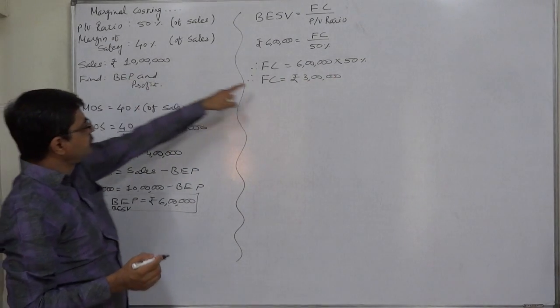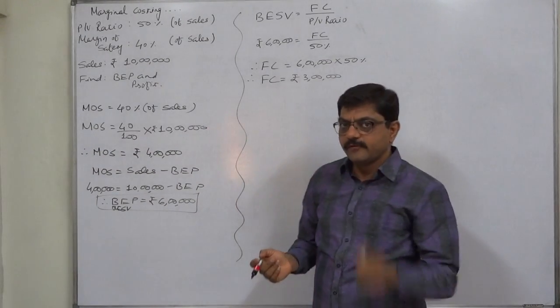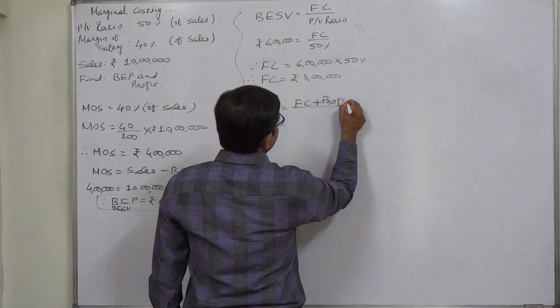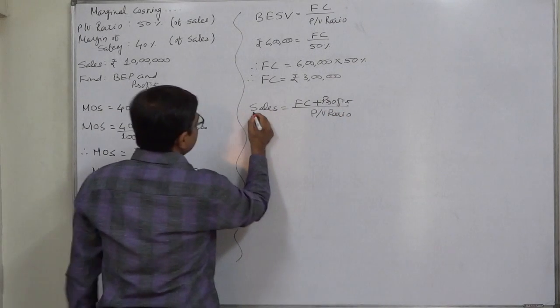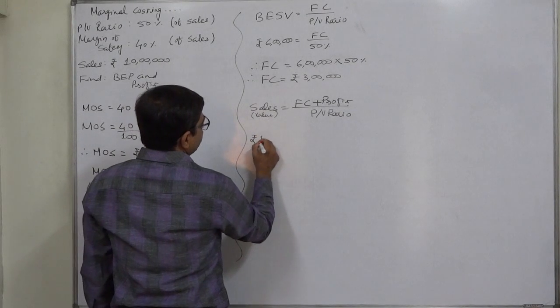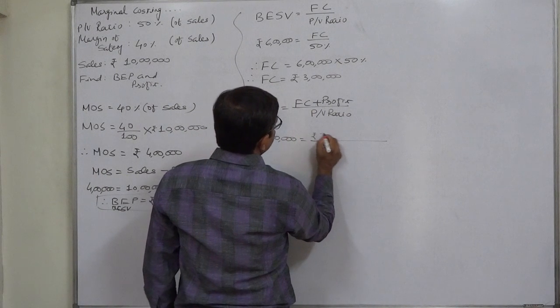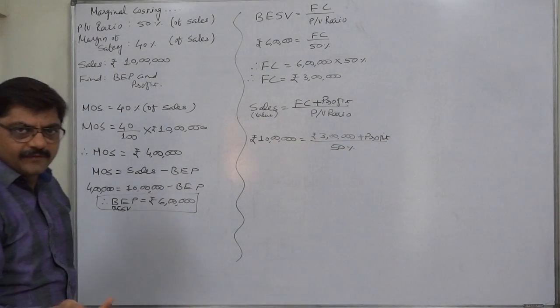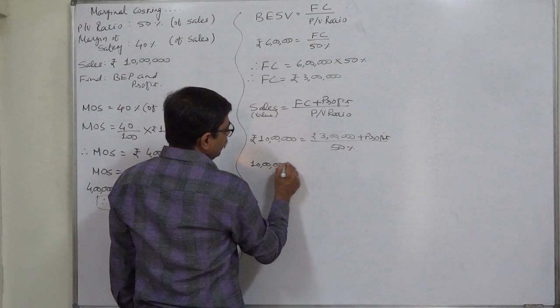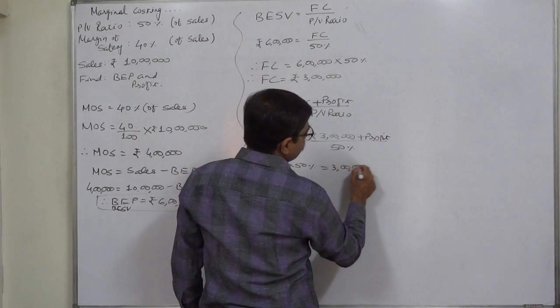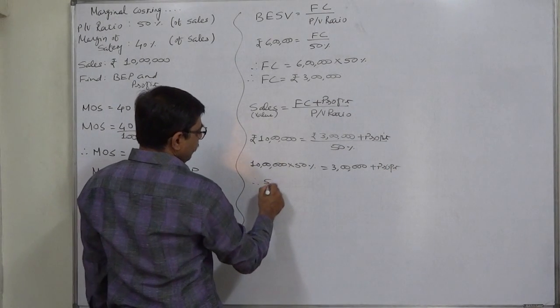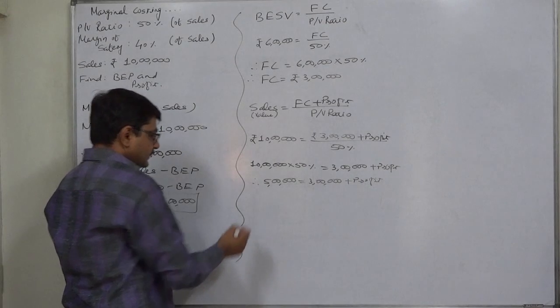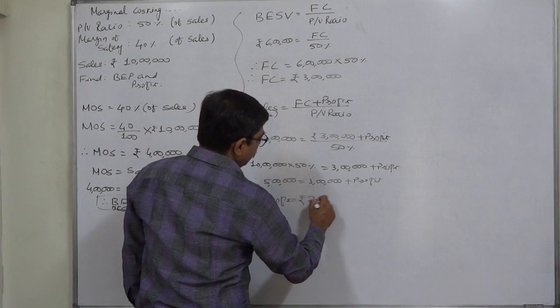Now, we have sales, fixed cost and PV ratio. So as a missing item, we can find out the profit from the formula of sales or required sales. Sales equals to fixed cost plus profit divided by PV ratio because the sales is in terms of value. Rupees 10 lakh or 1 million equals to fixed cost rupees 3 lakh, profit is missing, and PV ratio is 50% or you can write 0.5. Cross multiplication: 10 lakh into 50% or 50% of 10 lakh equals to 3 lakh plus profit. That is the last equation.